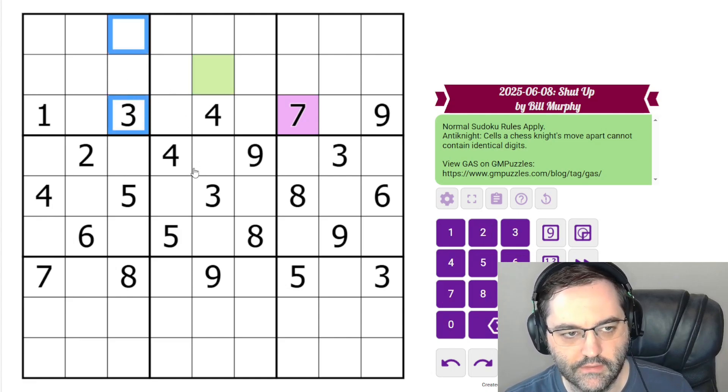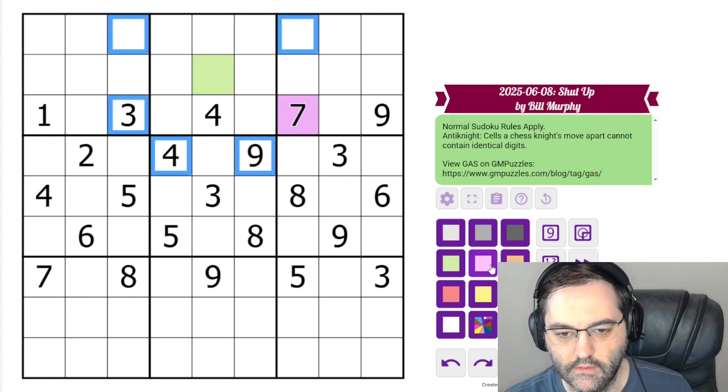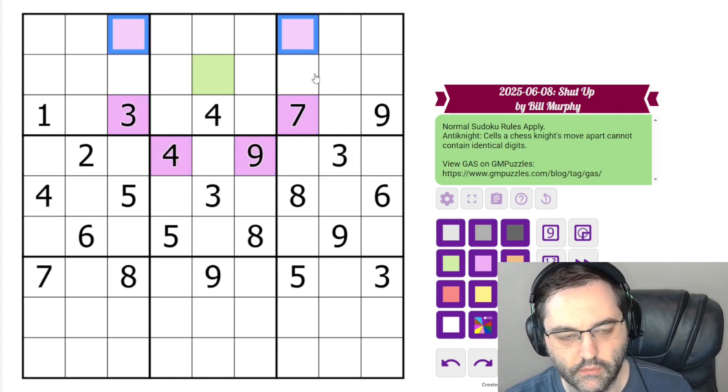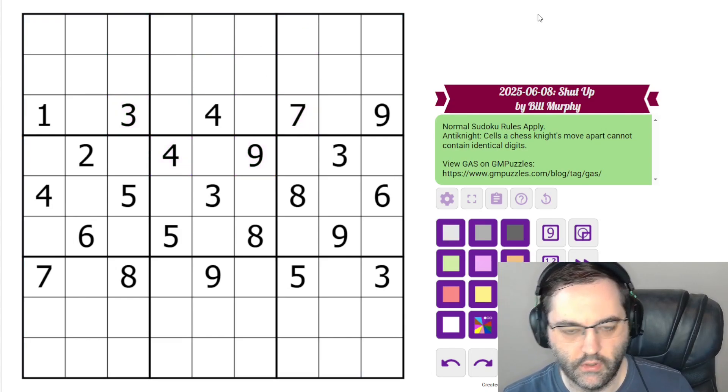So this cannot be seven. In fact, this green cell sees all of these as well. So this green digit cannot be three, four, seven, or nine, or whatever's in this. So those are the rules.